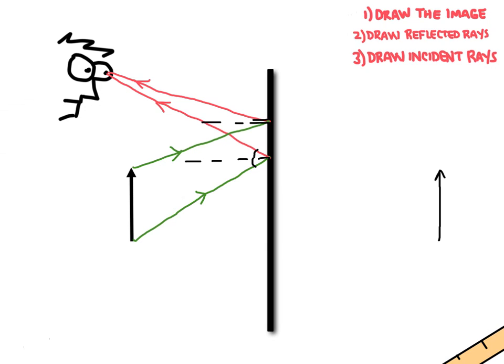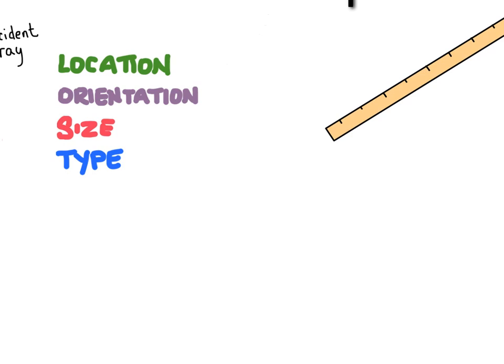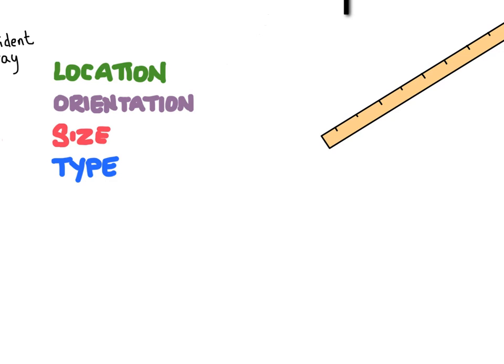The last thing we want to do is describe the image that's formed. We like to describe the location, orientation, size, and type of image — those four things. To remember that, you can use the acronym LOST. We want to describe any image produced from any mirror using these four things.